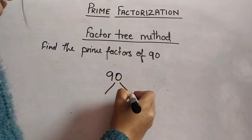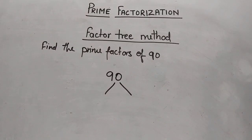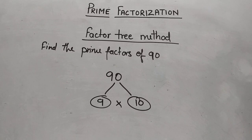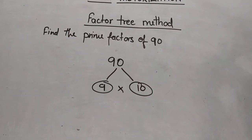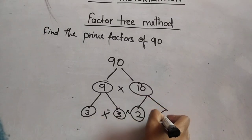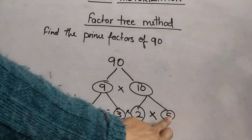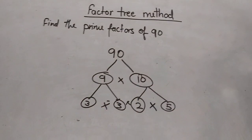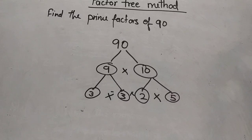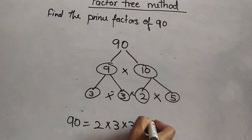We know that 90 can be broken up into many pairs of factors. Here we take it as 9 × 10. Both 9 and 10 are composite numbers, so we break them again into their factors: 9 = 3 × 3, and 10 = 2 × 5. At the last level, 3, 3, 2, and 5 are all prime numbers. So the prime factors of 90 are 2 × 3 × 3 × 5.